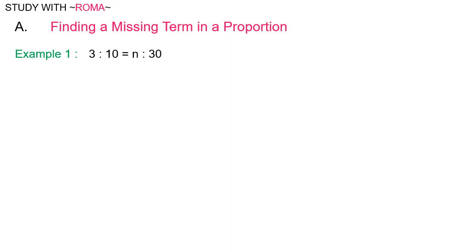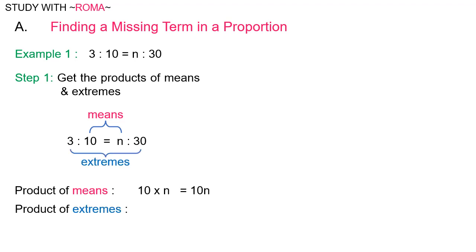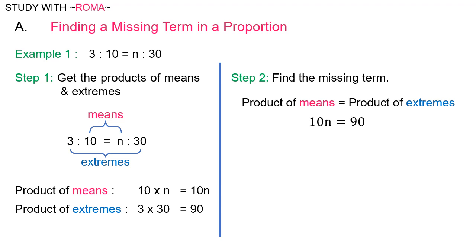Example number 1: 3 is to 10 is equal to n is to 30. Step 1: Get the products of means and extremes. The product of means, which is 10 times n, is equal to 10n. The product of extremes, which is 3 times 30, is equal to 90.